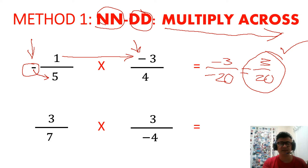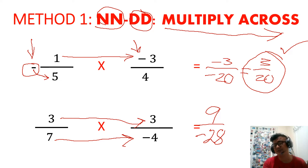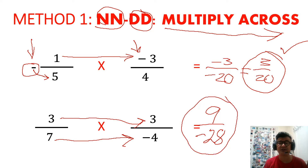Again, multiply across: 3 times 3 is 9 on top. Then 7 times negative 4 is negative 28. Can I leave the negative below? Yes, it doesn't matter. Can I move it to the middle or on top? Yes, it doesn't matter. This answer is already in lowest terms.